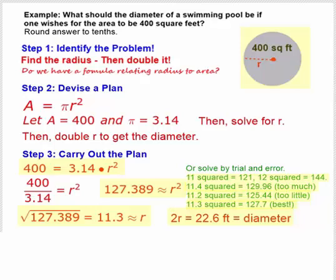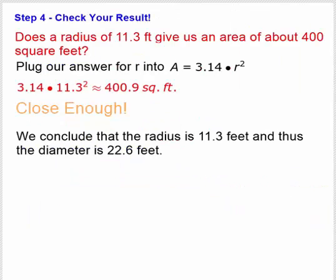Now it's time to move to step 4, where we check our results. Does a radius of 11.3 give us an area of about 400 square feet? Well, we plug our answer into this area formula, A = 3.14 × r².